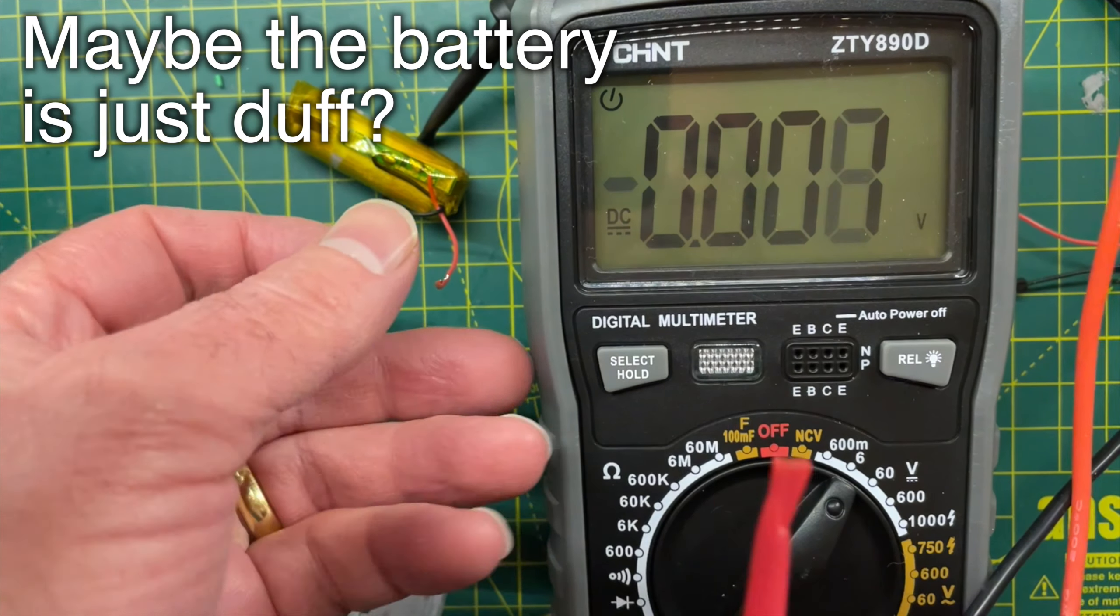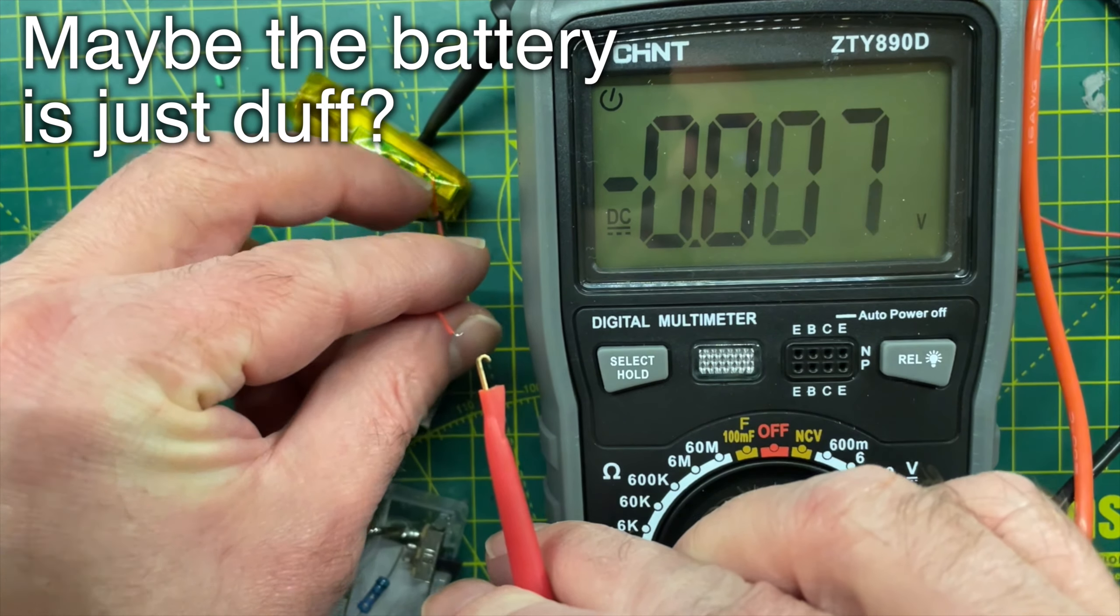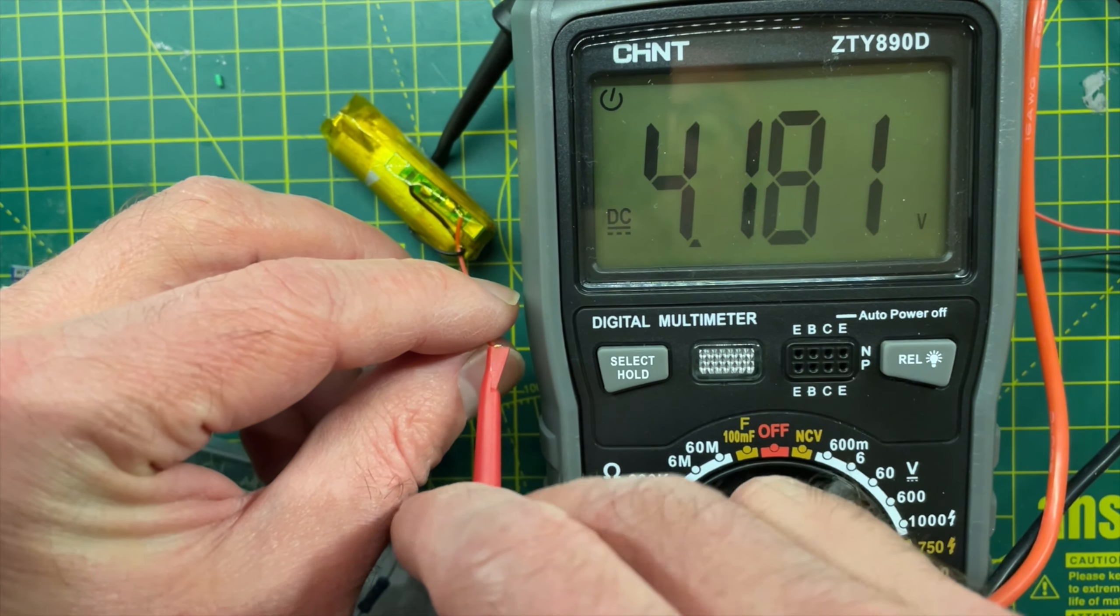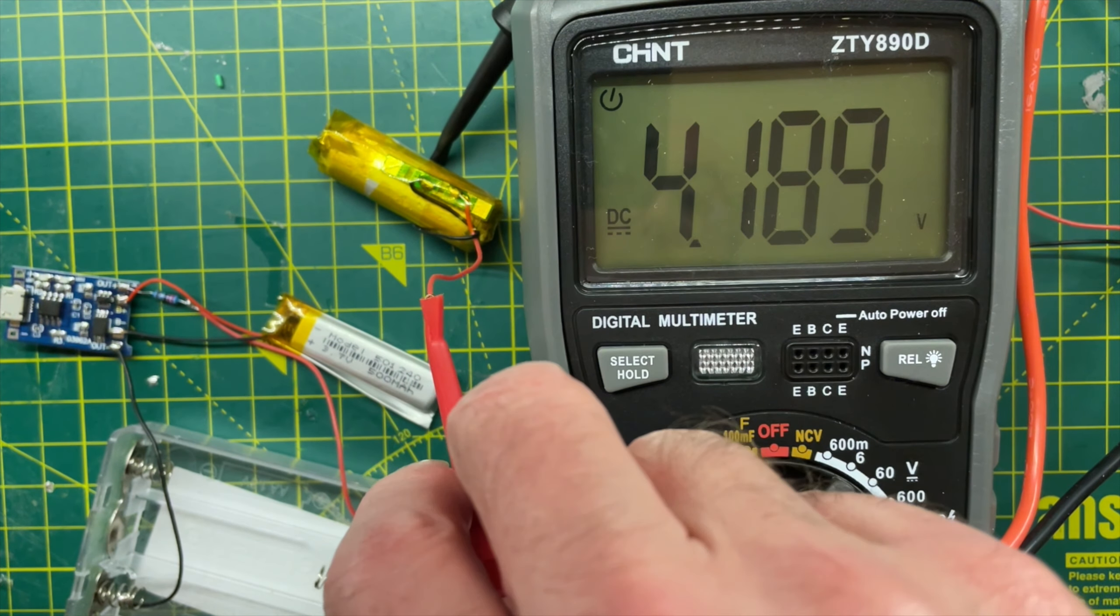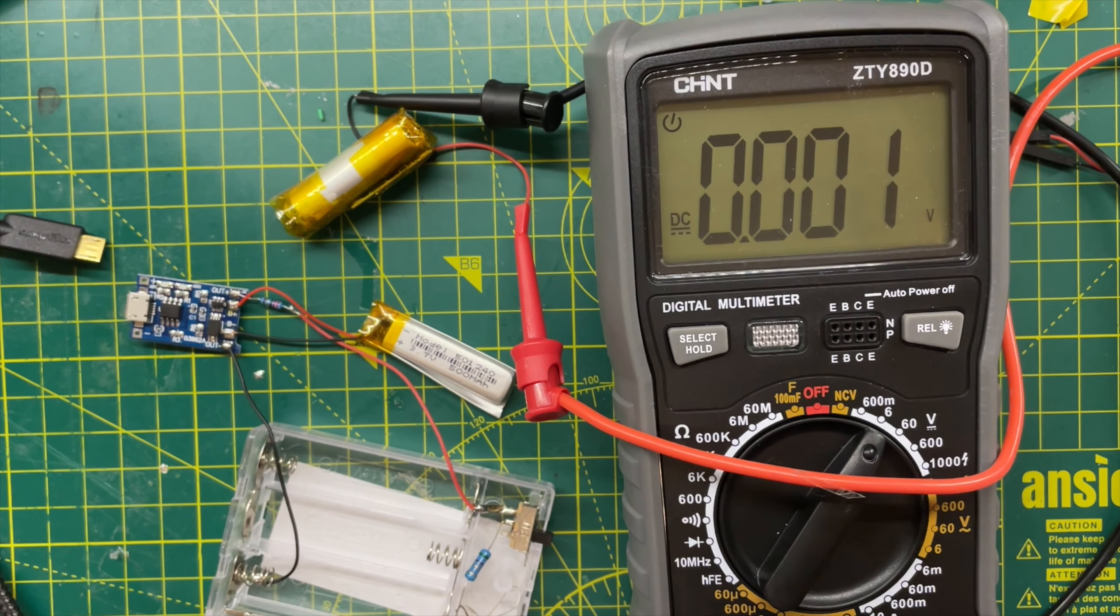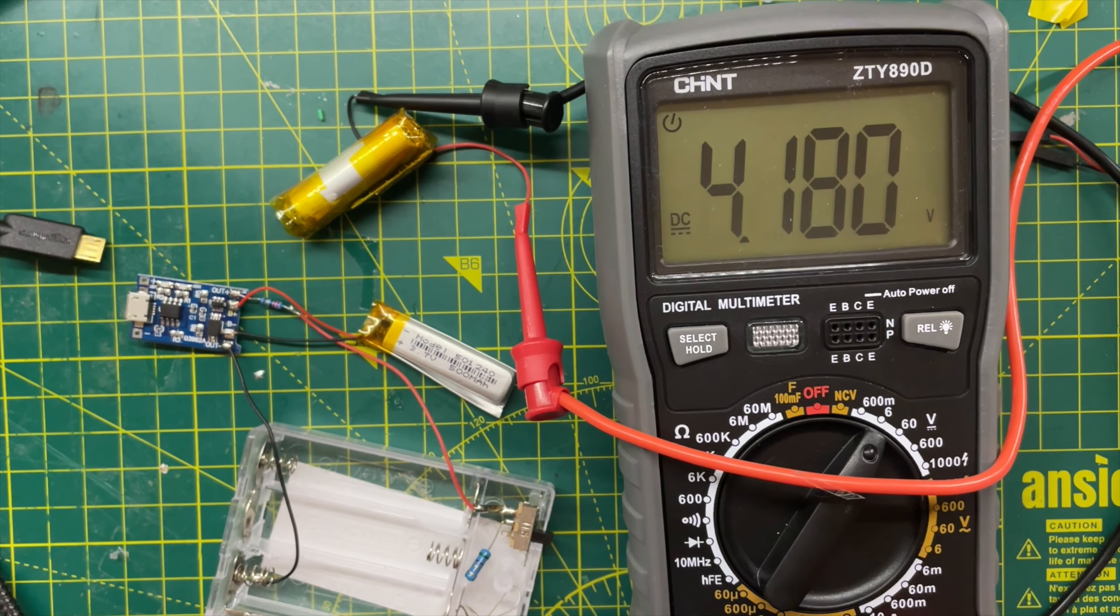So my next thought was that it's a salvaged battery. Maybe it's just a bit broken. So after charging it up again, I swapped it for a fresh off-the-shelf battery. I left both of these overnight. The new battery connected to the PCB and the old battery disconnected from everything.